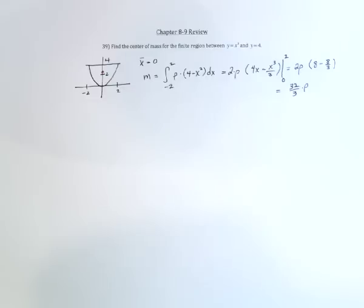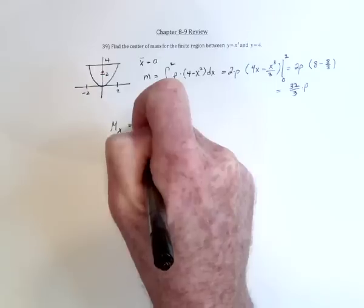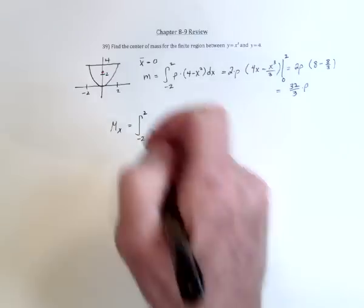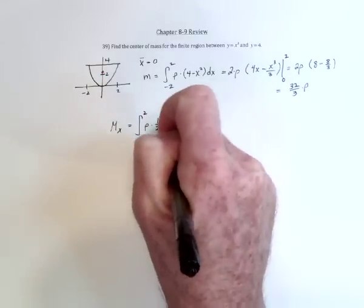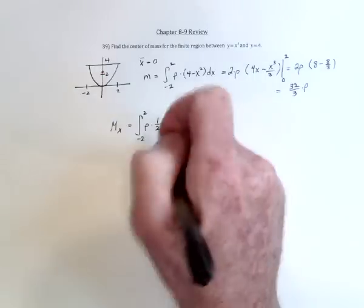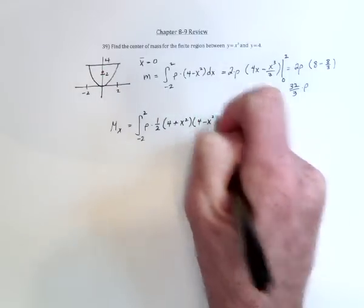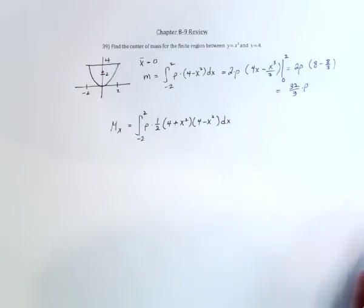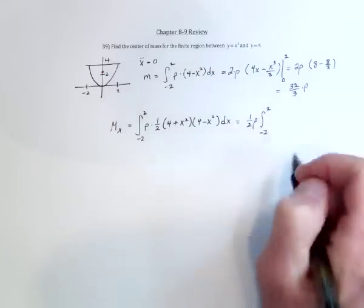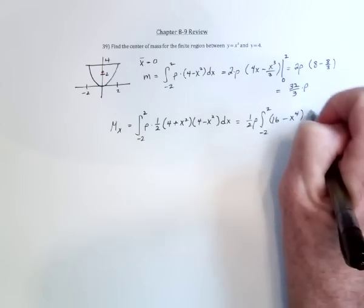Now we need one other integral, the moment about the x-axis. Integrate from negative 2 to 2, the density, and then it's 1 half. Add the two functions together and subtract the two functions: 4 plus x squared and 4 minus x squared. Doing the algebra, that gives us 16 minus x to the 4th. The middle terms cancel.